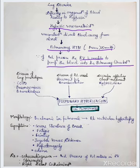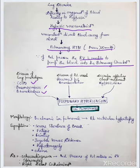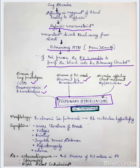The causes include diseases of the lung parenchyma like COPD, pneumoconiosis, and bronchiectasis; diseases of the pulmonary vessels such as recurrent pulmonary thromboembolism; and disorders affecting chest movements like kyphoscoliosis. All of these lead to pulmonary hypertension and ultimately cor pulmonale.